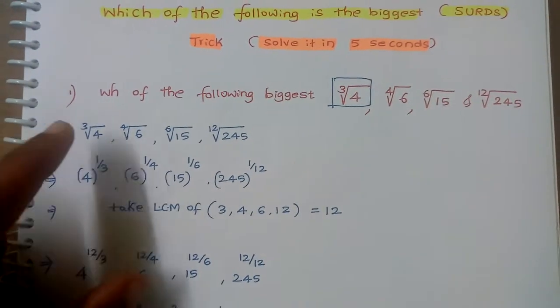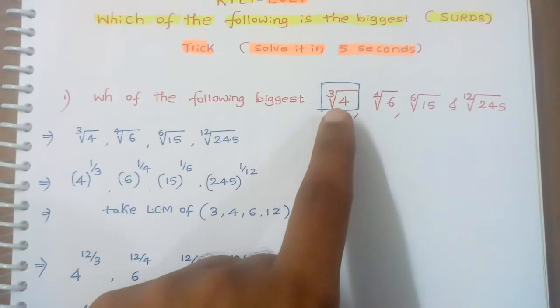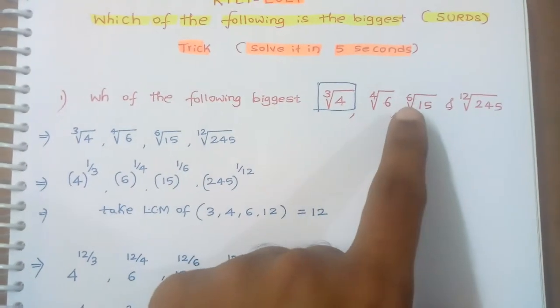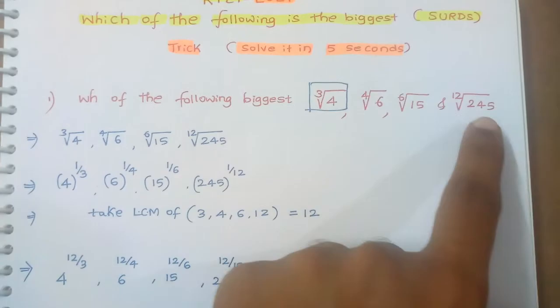For such type of questions, first which of the following is biggest: cube root of 4, fourth root of 6, sixth root of 15, twelfth root of 245.